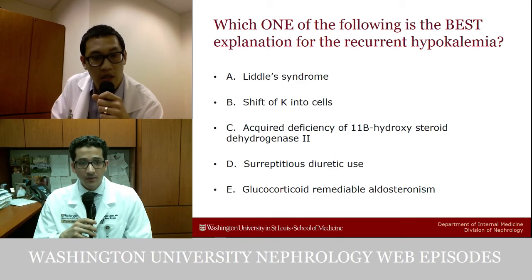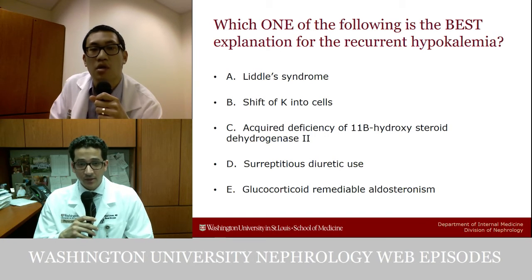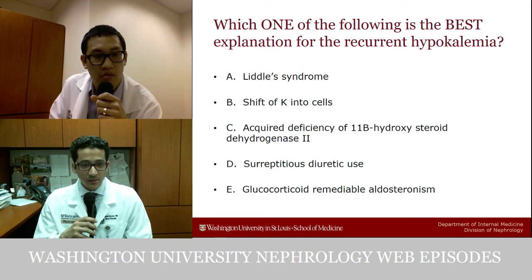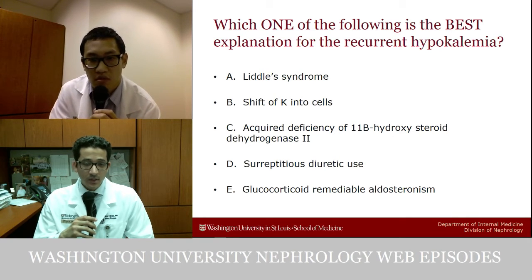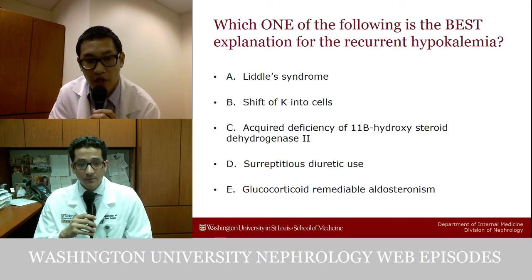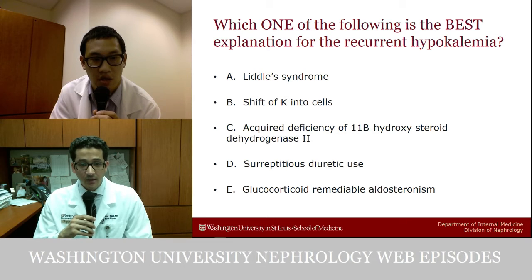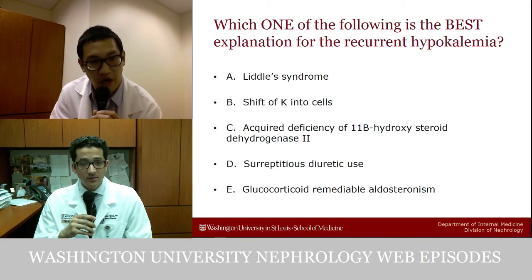An intracellular potassium shift is argued against by the elevated TTKG, which was checked during the event. Surreptitious diuretic use can cause a high TTKG but typically causes low blood pressure and elevated aldosterone — the low renin and low aldosterone in the question stem argue against that. Glucocorticoid remediable aldosteronism would cause hypokalemic hypertension, but aldosterone should be high, which is not the case here.